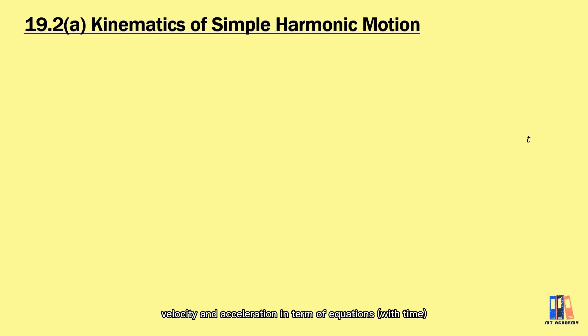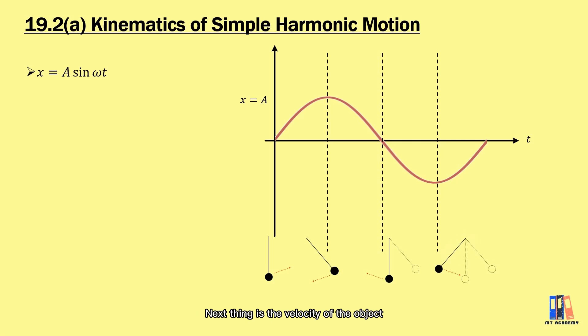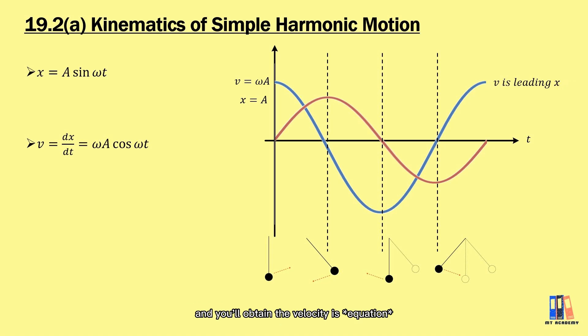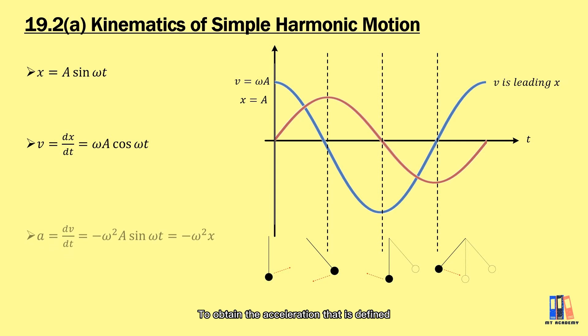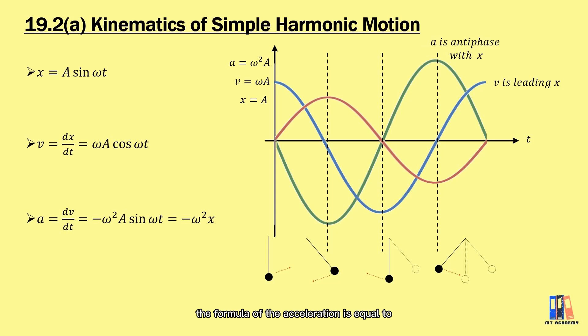Now we're going to express displacement, velocity, and acceleration in terms of equations. Starting with the displacement equation: x = A sin(ωt). From the graph of the sine function, the object starts at the point of equilibrium and moves to the right. Velocity is defined as the rate of change of displacement, so differentiating displacement gives velocity equal to ωA cos(ωt). Differentiating again for acceleration gives negative omega squared A sin(ωt), where A sin(ωt) can be replaced by x. This is how we obtain the formula: acceleration equals negative omega squared x.